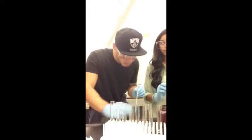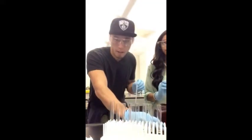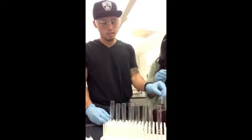In our first step, we'll be adding one milliliter of 1% silver nitrate ethanol into each test tube.